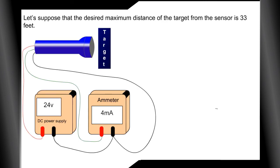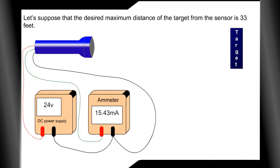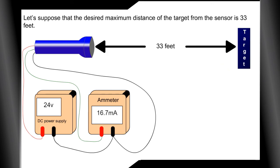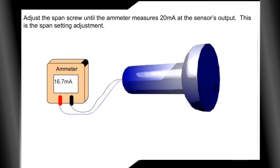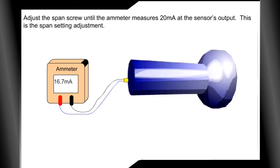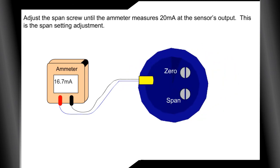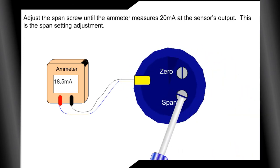Let's suppose that the desired maximum distance of the target from the sensor is 33 feet. Adjust the span screw until the ammeter measures 20 milliamps at the sensor's output. This is the span setting adjustment.